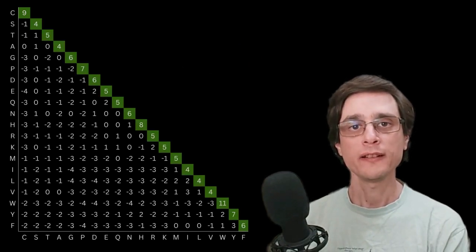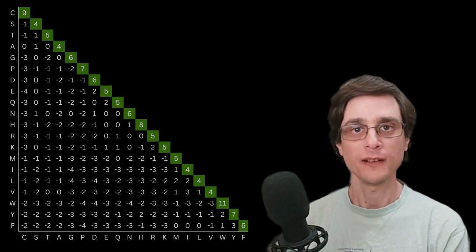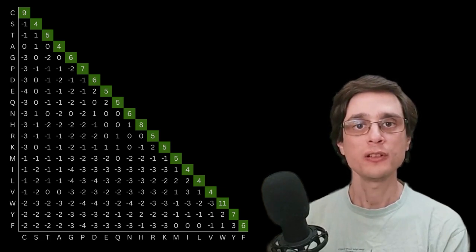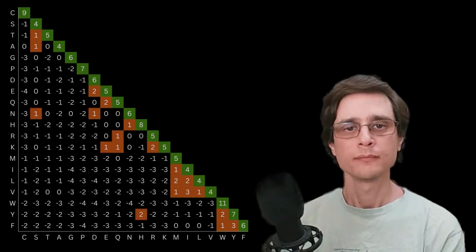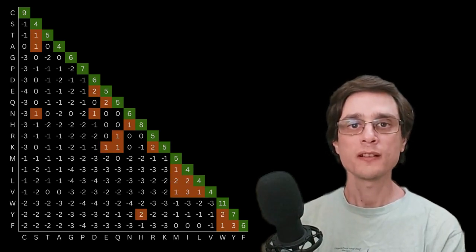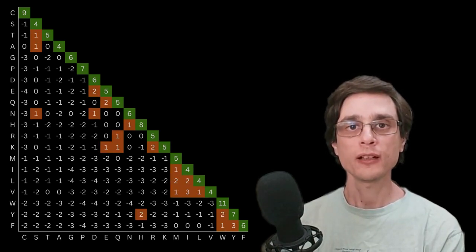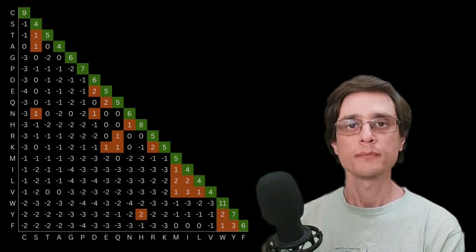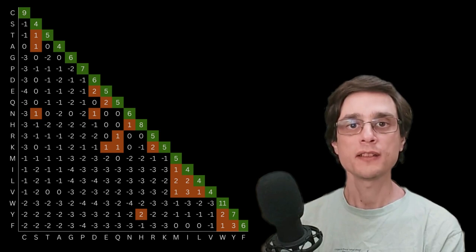Cells that are not on the diagonal represent mismatches and usually contain negative values, as mismatches usually decrease sequence similarity. It's important to know that some of the cells that represent mismatches do in fact contain positive values. Such cases represent substitution of a residue with a different yet similar one.